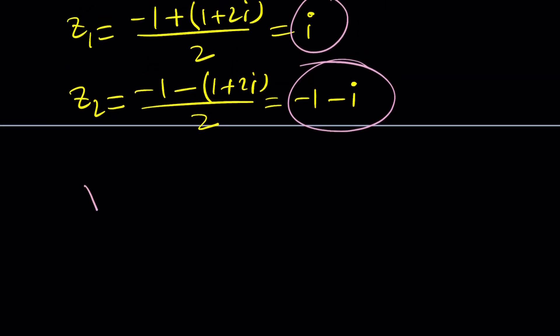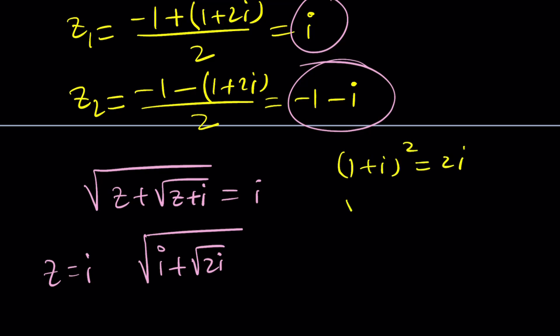Now, if you consider the original problem, this is what we had, and now if z is i, replace z with i, you're going to get the square root of i plus the square root of 2i. And we expect this to be equal to what? What was it equal to? i, right? Okay. Let's see if this is going to work. Now, what's the square root of 2i? 2i has two square roots. If you remember, when we square 1 plus i, we get 2i. Therefore, one of the square roots of 2i is 1 plus i.